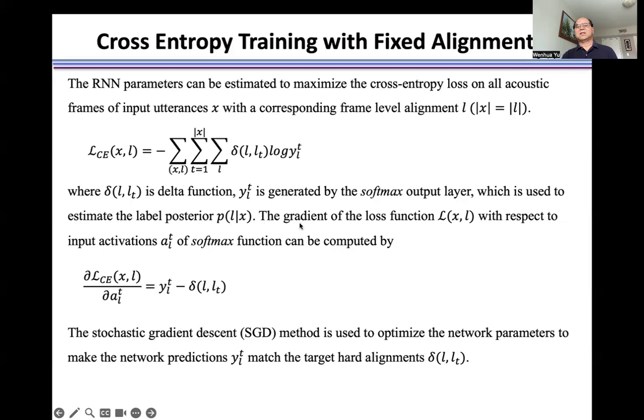The gradient of the loss function L_CE(x,l) with respect to input activations of the softmax function can be calculated by using the difference of two terms. The stochastic gradient descent method is used to optimize the network parameters to make the network predictions y_t^l match the target hard alignment delta(l,l_t).